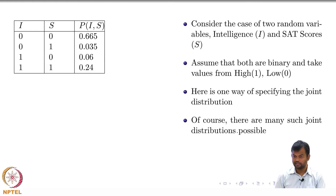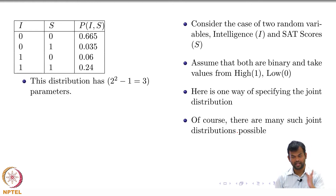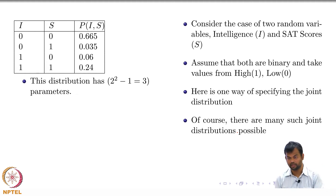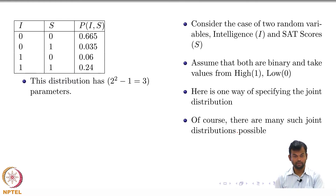How many parameters does this distribution have? 3 parameters — because if I know 3 parameters, the last one is just determined by the constraint that they sum to 1. So this distribution has 3 parameters.